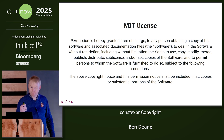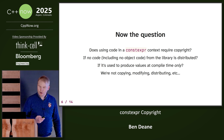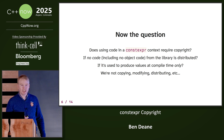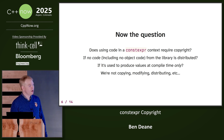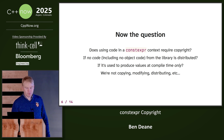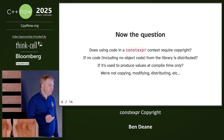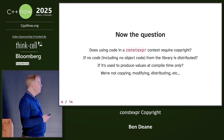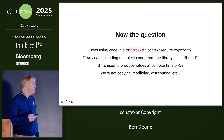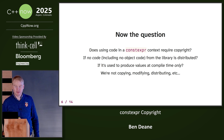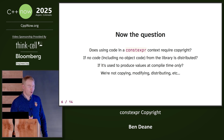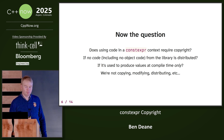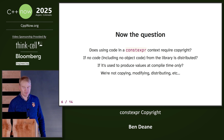Now the question: if I use code in a constexpr context only, do I require copyright? If no code from the library I used is distributed in my binary, and it's used to produce values at compile time only, I'm not copying anything, I'm not modifying, I'm not distributing. Does that require a copyright license?